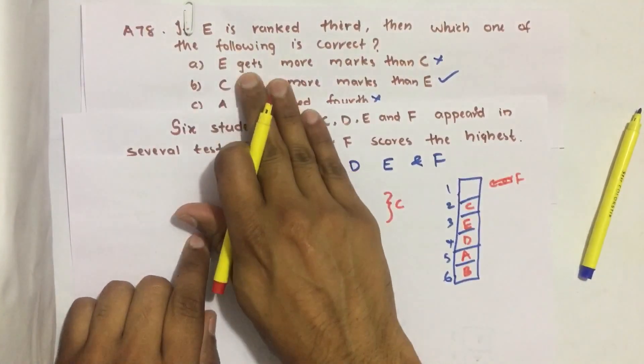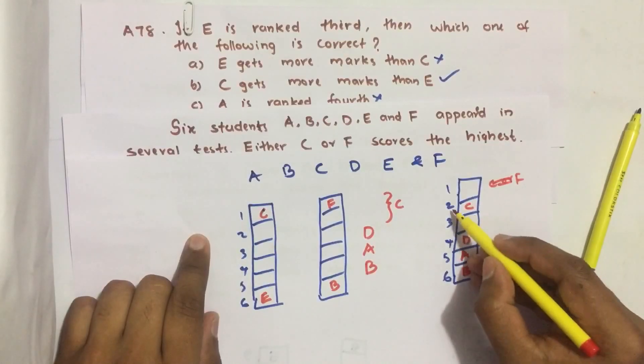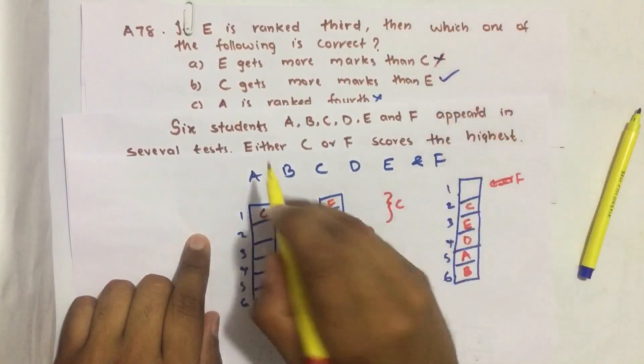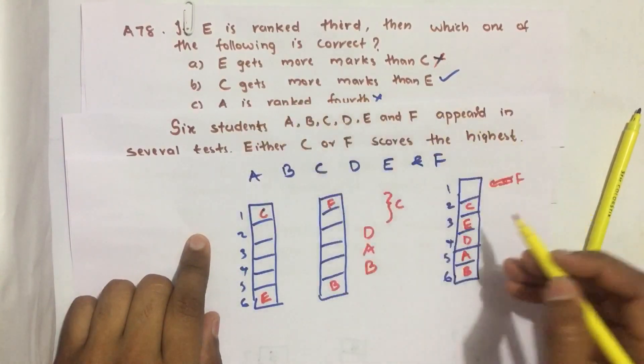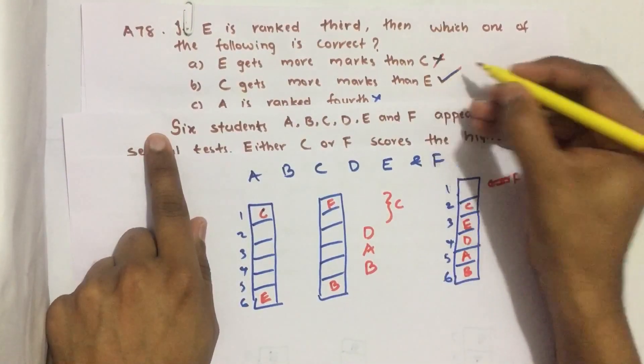Now see the statements. E gets more marks than C. E is third and C is second. So this statement is wrong. Next, C gets more marks than E. C is second and E is third. So this statement is correct.